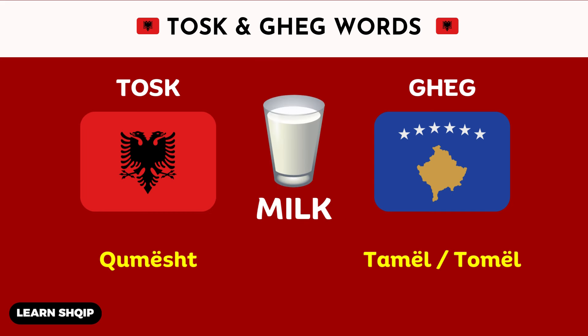Then let's see the word milk. In the Tosk dialect, you will say Chumësht. And then in Geg, you are going to either say Tamëll or Tomëll.